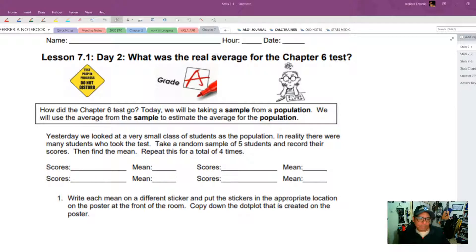So how did Chapter 6 test go? Today we're going to take a sample from a population and we're going to use the average from a sample to estimate the average of the population. So yesterday we looked at a very small class of students as a population. In reality there were many students who took that Chapter 6 test. So we're going to take a random sample of five students, all of whom took the Chapter 6 test on one of my past years.